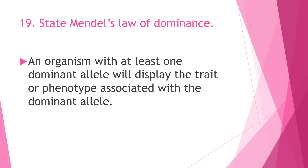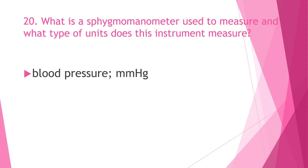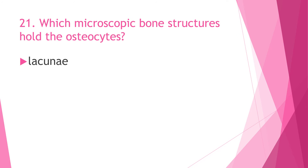Question 19: State Mendel's law of dominance. An organism with at least one dominant allele will display the trait or phenotype associated with the dominant allele. Question 20: What is a sphygmomanometer used to measure, and what units does it use? It measures blood pressure, and the unit used is millimeters of mercury, or mmHg.